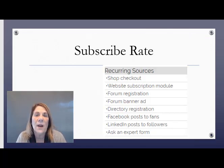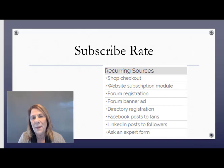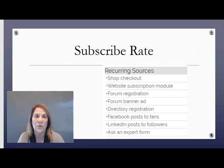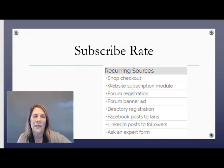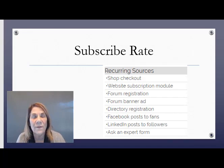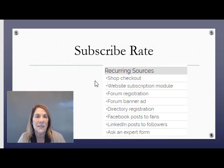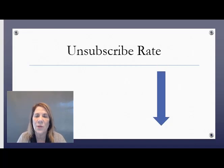Number five is subscribe rate — what are the different things I'm doing to drive people into my email list and how many are subscribing from different sources? You can go into your autoresponder and tag people when they come in from different sources. You can see, 'I have more people subscribing from this offer on Instagram,' and over on LinkedIn you're not getting any subscriptions, so maybe drop that. Keep looking at your data.